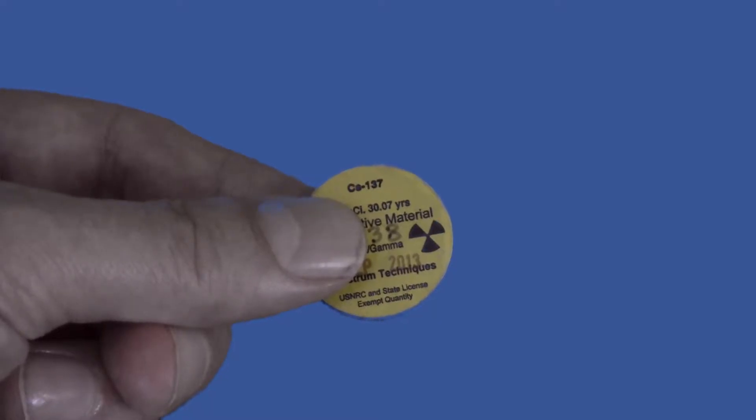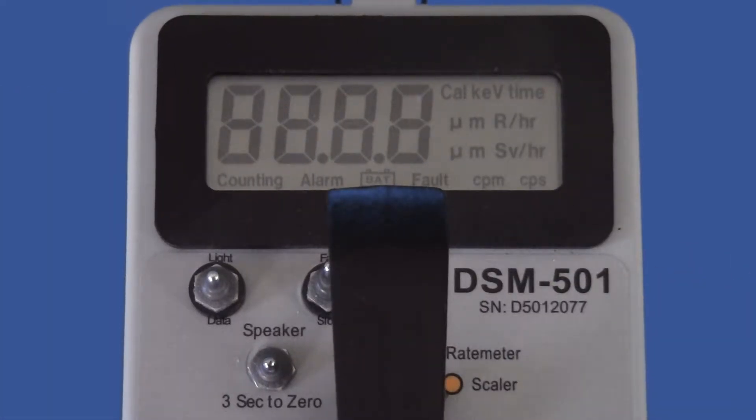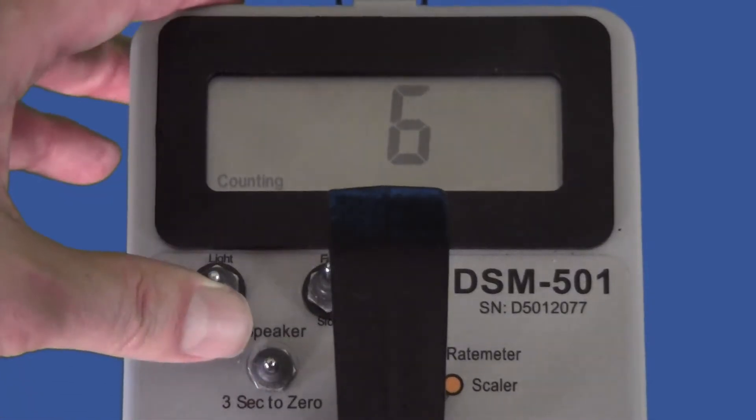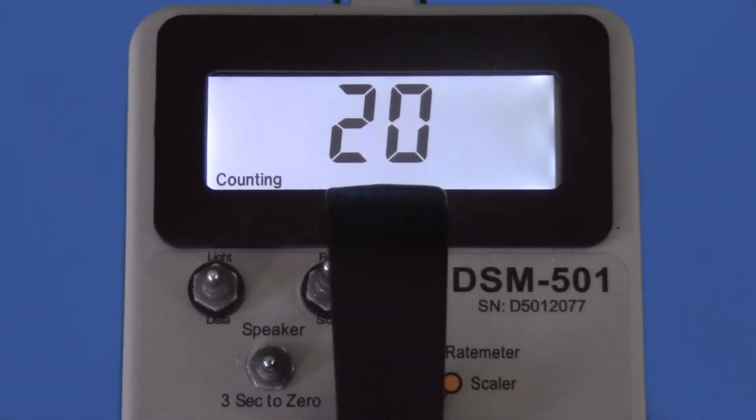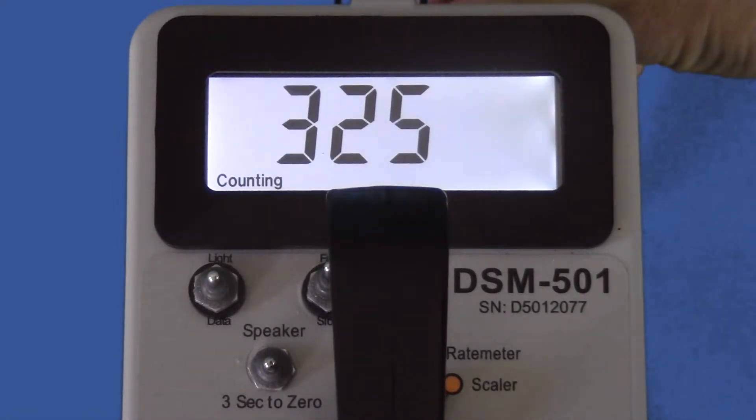We will test the scalar mode using a 1 microcurie cesium-137 check source. First, turn to scalar mode. Place the source near the detector window. As the scalar counts to 10 seconds, we wait. The reading is 1,287 counts.